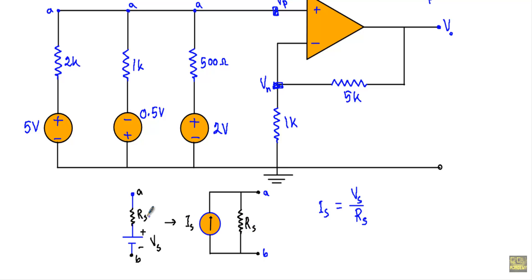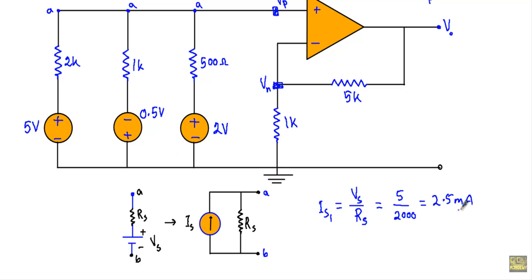For IS1 from the 5-volt source in series with 2 kΩ: IS1 equals 5 V divided by 2000 Ω, which gives 2.5 mA. The 5-volt source supplies current toward the non-inverting terminal, so the direction of IS1 is upward. IS1 will be in parallel with 2 kΩ.